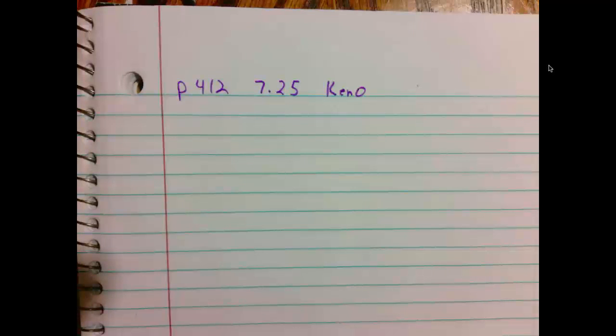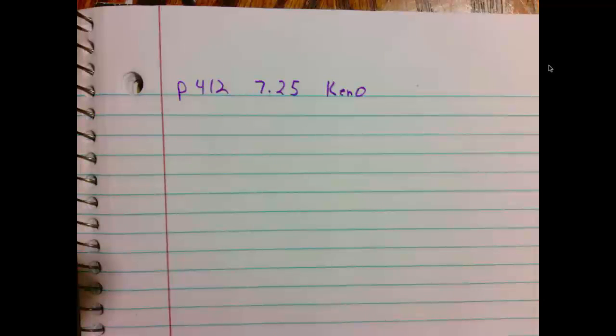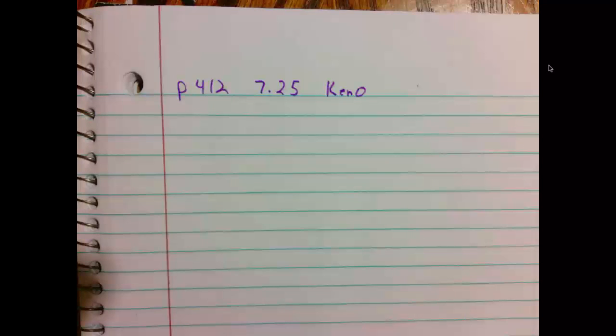Your payoff is $3 on a $1 bet if you select one of the chosen numbers. Because there's 20 out of 80 numbers chosen, your probability of winning is 20 out of 80, which is 1 fourth.